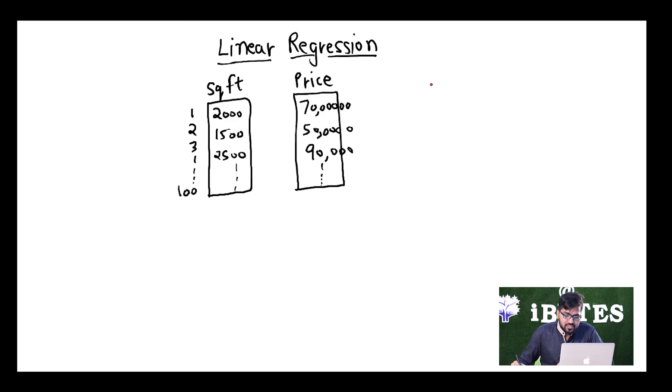If I try to plot this on a graph, so basically this is my y-axis and this is my x-axis. This x is square feet and this is price. So if I just plot all these 100 points on this graph, let's assume that these are 100 points.